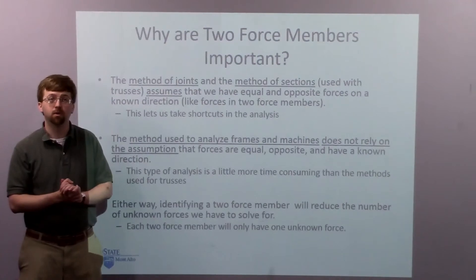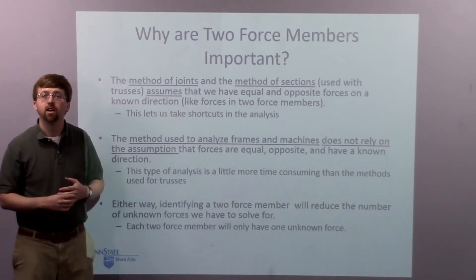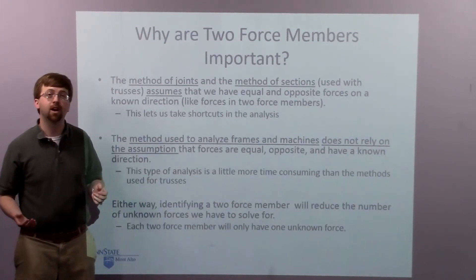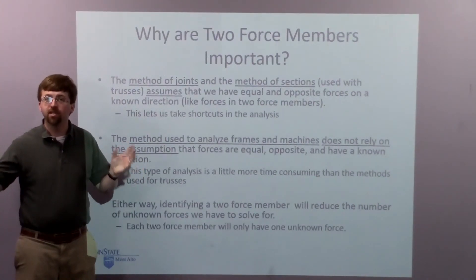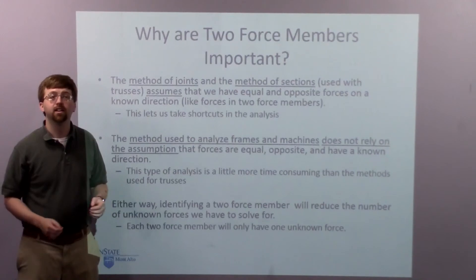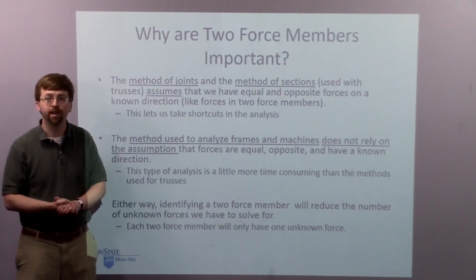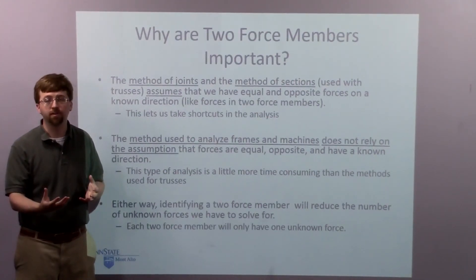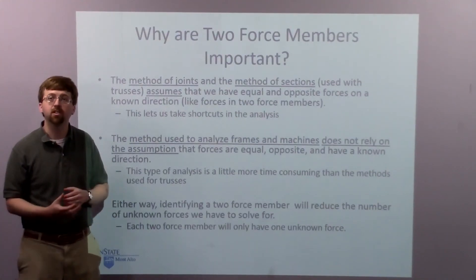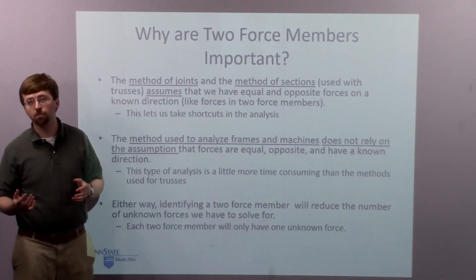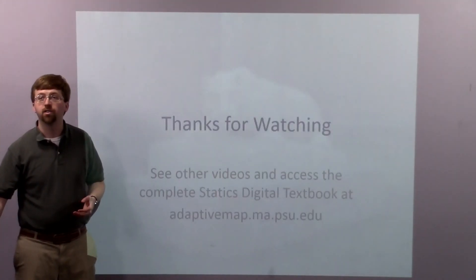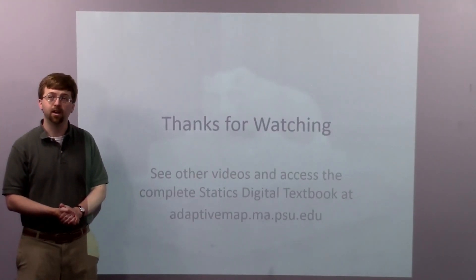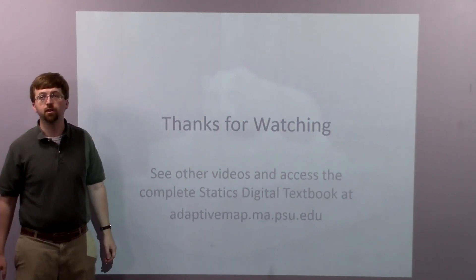Finally, overall, when we're doing any of these methods, by identifying a two force member, I'm reducing the number of unknowns. I no longer have to worry about separate reactions on either side. There's basically one value that's going to tell me so many pounds of tension, so many pounds of compression. And if I make that assumption, I cut down on my unknowns, I make my analysis easier. So, with that, that's all I have for the video lecture. Thank you for watching, and I hope to see you again.